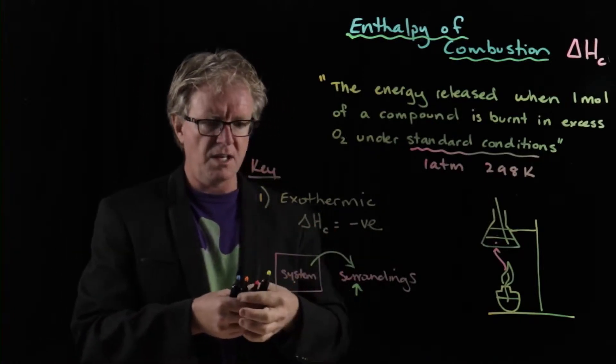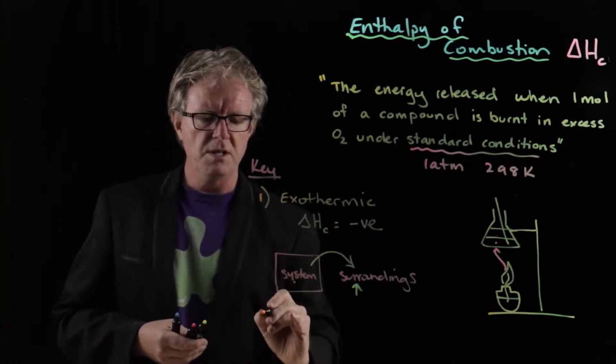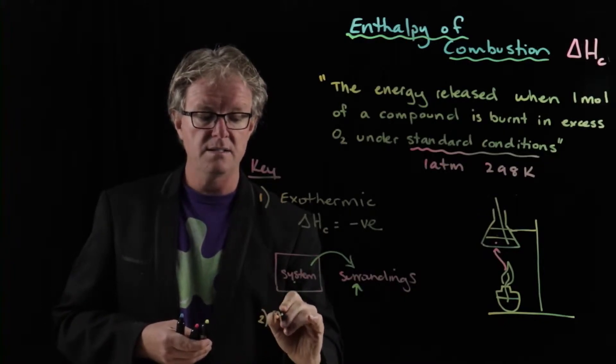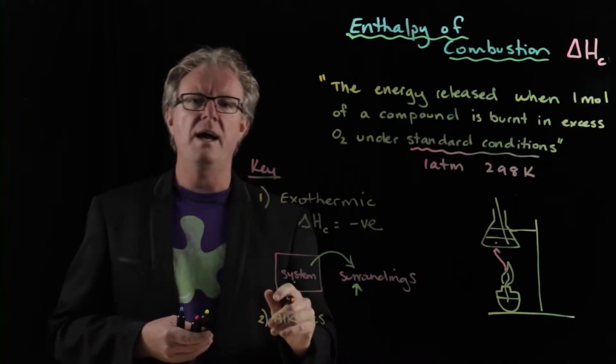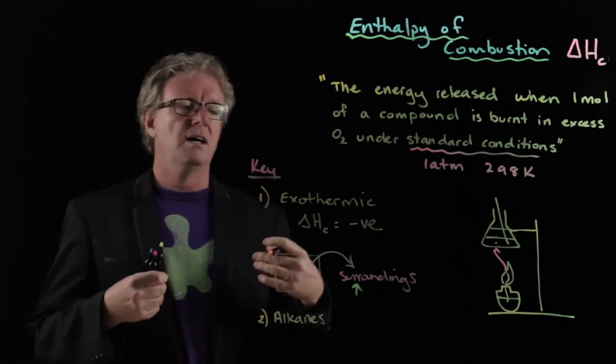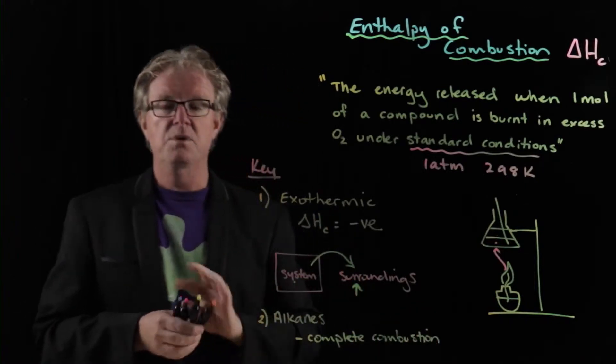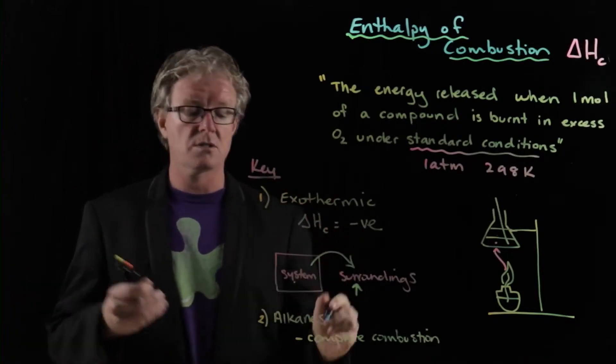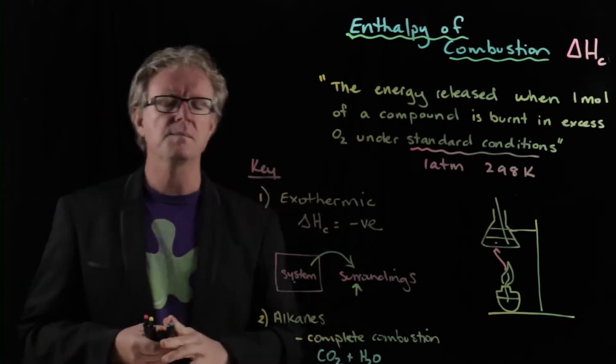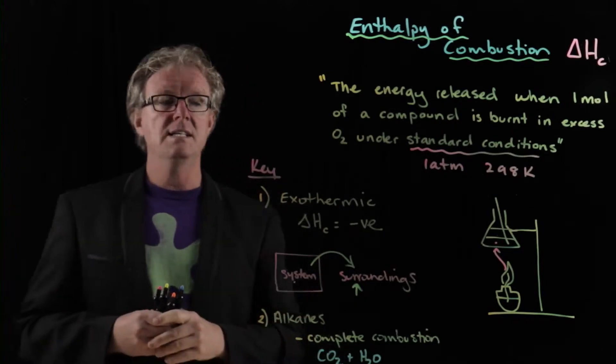Whatever's lost is equal to whatever's gained by the surroundings. So that's the first key idea there, that exothermic is negative. The second key idea is that we're burning alkanes, and when we burn alkanes, we're going to hopefully get complete combustion. And with complete combustion, you form two products: carbon dioxide and water.